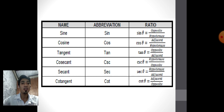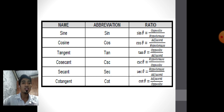Cosine is abbreviated by cos; its ratio is adjacent over hypotenuse. Tangent is abbreviated by tan; its ratio is opposite over adjacent. Cosecant is abbreviated by csc; its ratio is hypotenuse over opposite. Cotangent is abbreviated by cot; its ratio is adjacent over opposite. As you can observe from the table, the first three ratios are reversed from the last three ratios: the reverse of sine is cosecant, the reverse of cosine is secant, and the reverse of tangent is cotangent.